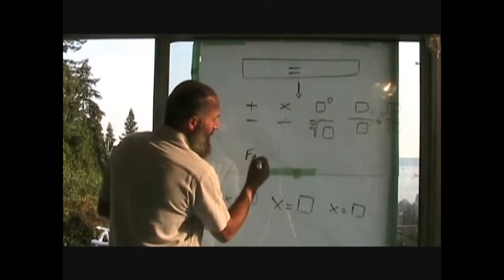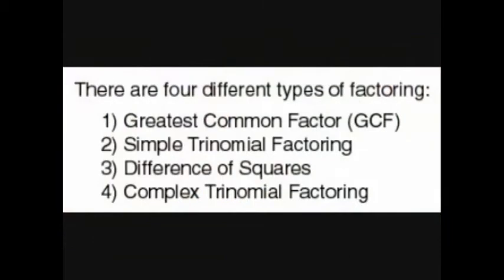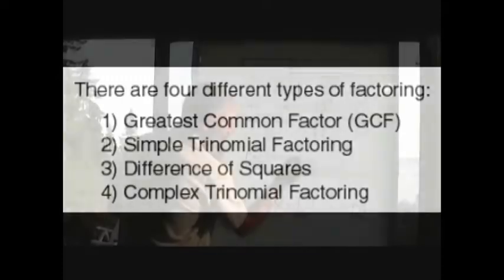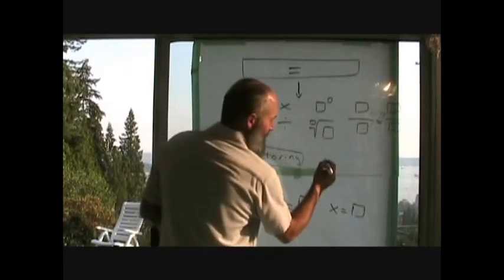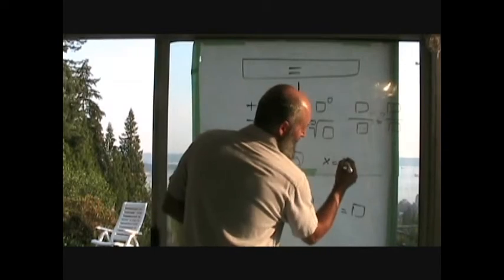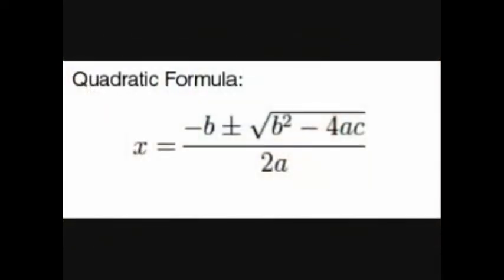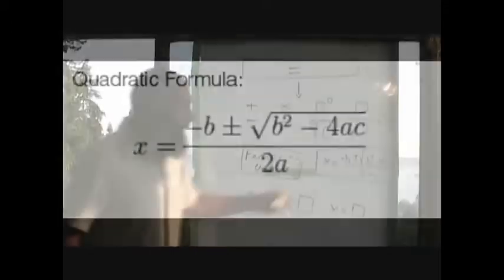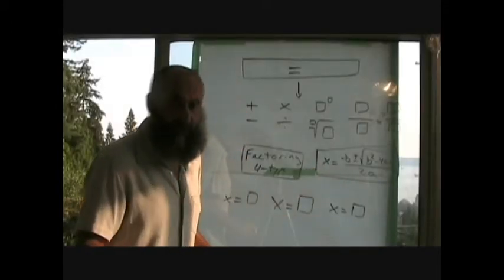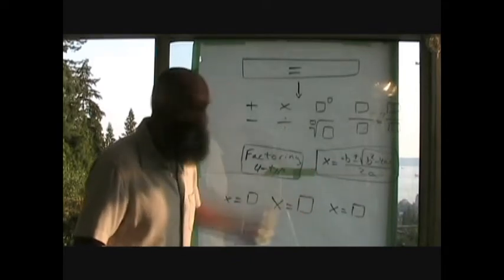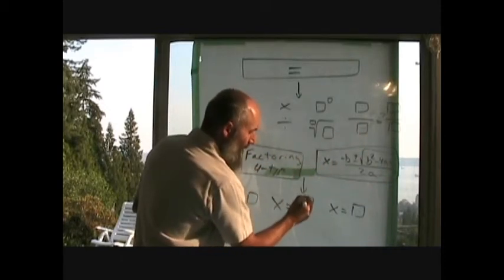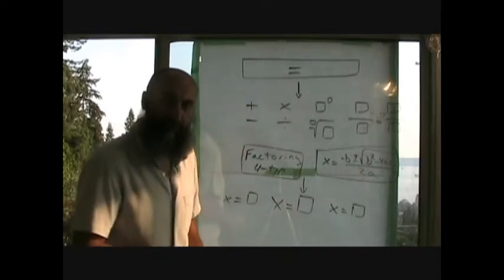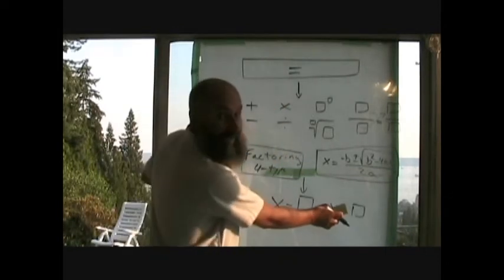These new powers are factoring and the quadratic formula. The quadratic formula gives us the factors — which are the roots, the zeros, the x-intercepts — for stuff that we can't factor straight up. In addition to the existing rules, we're going to learn these new tools and be able to crunch more complicated equations than just simple equations where we only get one x-solution. We're going to start talking about multiple x-solutions and more complicated equations.